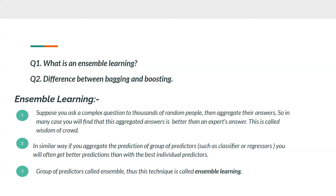Let's understand ensemble learning first. Suppose you ask a complex question to thousands of random people, then aggregate their answers. In many cases, you will find that this aggregated answer is better than an expert's answer — this is called the wisdom of crowd. In a similar way, if you aggregate the predictions of a group of predictors such as classifiers or regressors, you will often get better predictions than the best individual predictor. A group of predictors called an ensemble — this technique is called ensemble learning, where we combine two or more algorithms together and get results.